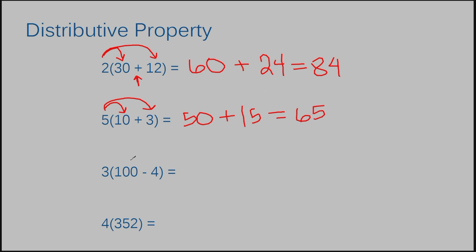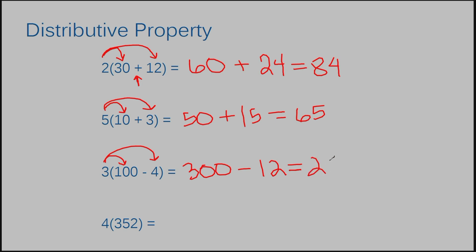Now coming to this example: 3 times 100, then 3 times 4. 3 times 100 is 300. I'm going to subtract this time because we're subtracting in the problem — they gave a subtraction sign in the beginning. 3 times 4 is 12. 300 minus 12 is 288.